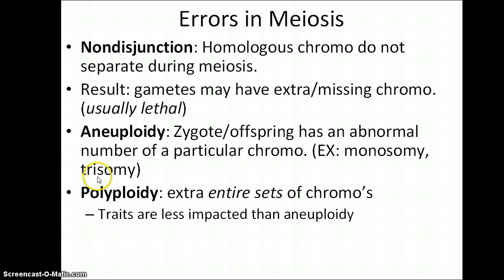Trisomies are probably the most common type of aneuploidy that we would run into, specifically like trisomy 21, or Down syndrome. Polyploidy is much more often seen in plants — this is a circumstance in which entire sets of chromosomes are found in addition to the diploid number within a cell. Some of the types of foods we eat will have multiple extra sets of chromosomes, like certain varieties of wheat will have as many as six sets of chromosomes.